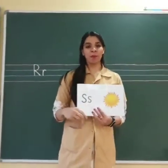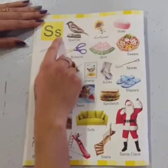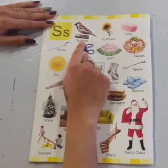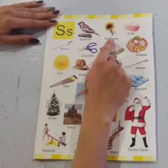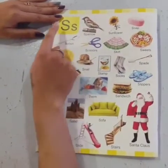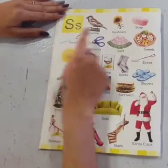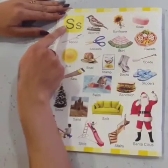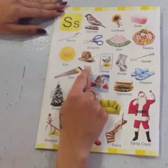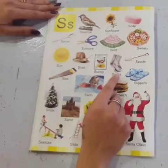Now let us see some vocabulary words related to letter S. Capital S, small s — S sounds S. S for sparrow. S for sunflower. S for soap. S for spoon. S for scissors. S for skirt. S for sweets. S for sun — we can see this in the sky. S for snail — it's an insect. S for stamp. S for socks.